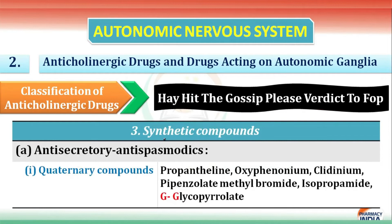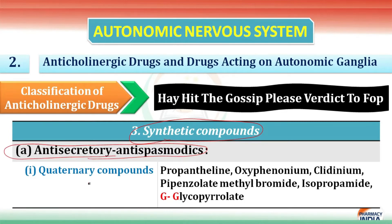Next are synthetic compounds. The first category is anti-secretory and anti-spasmodic. Students, a question is sometimes asked in the GPAT exam about which drug is anti-secretory or anti-spasmodic. The first subcategory here is quaternary compounds.